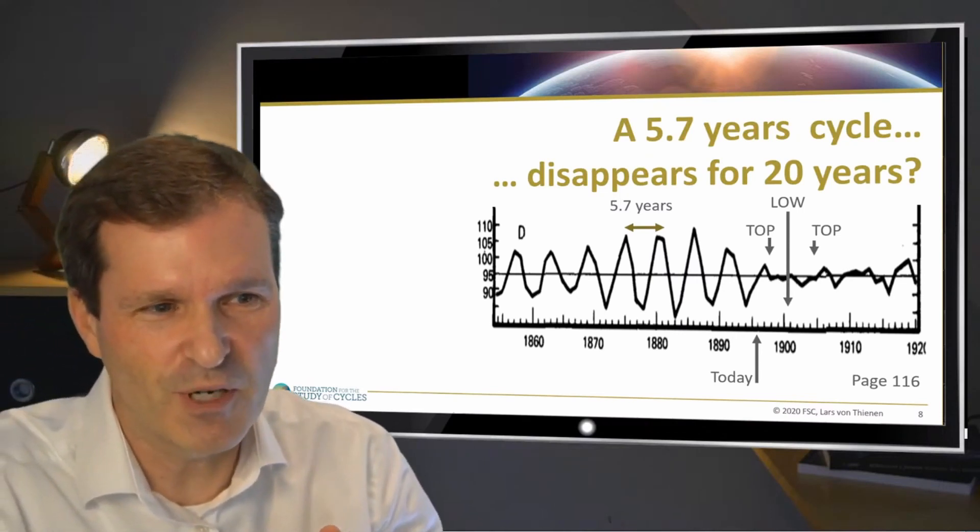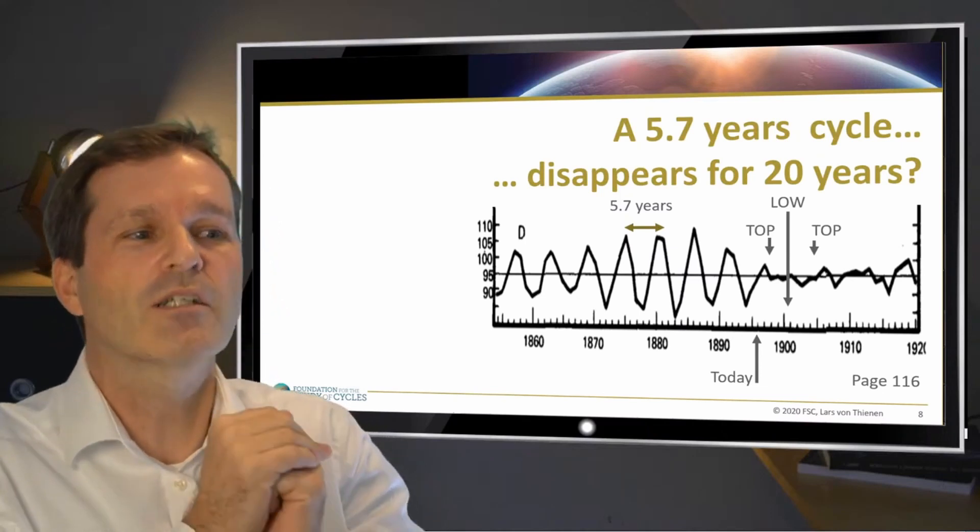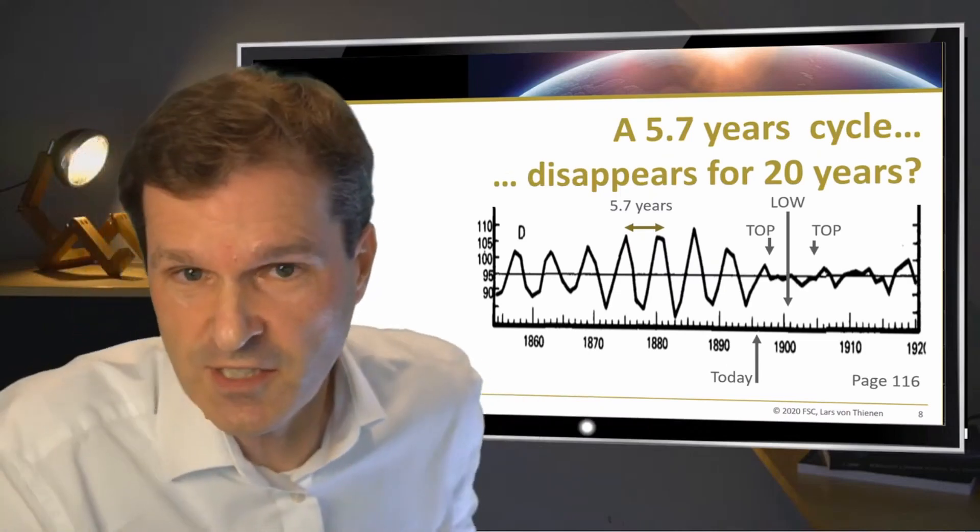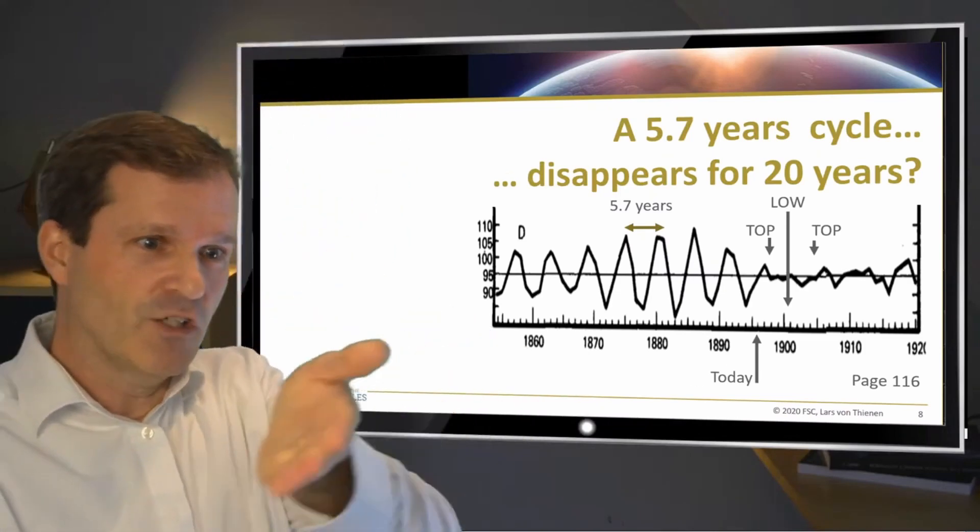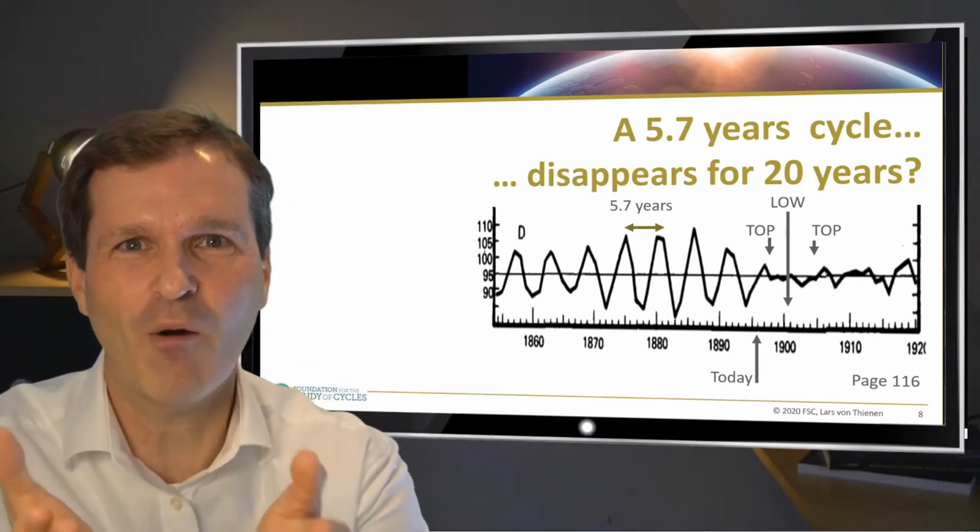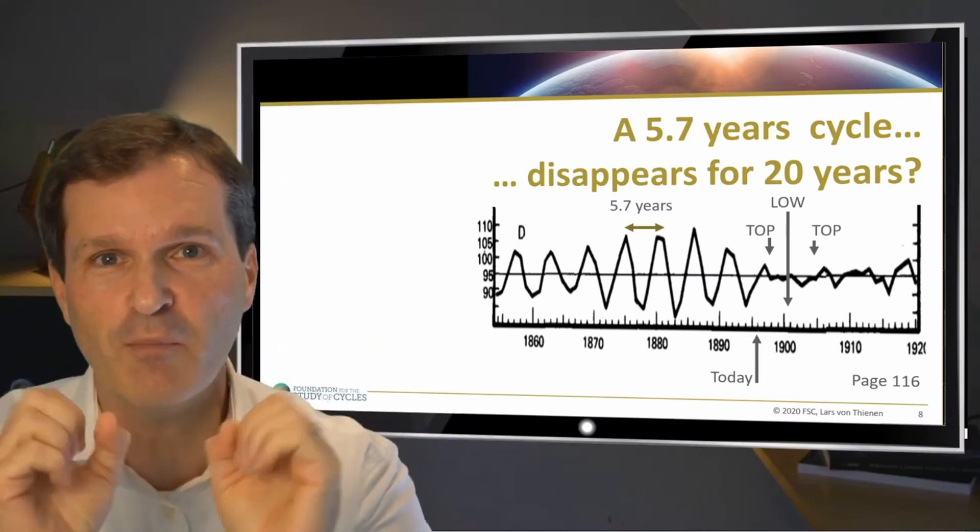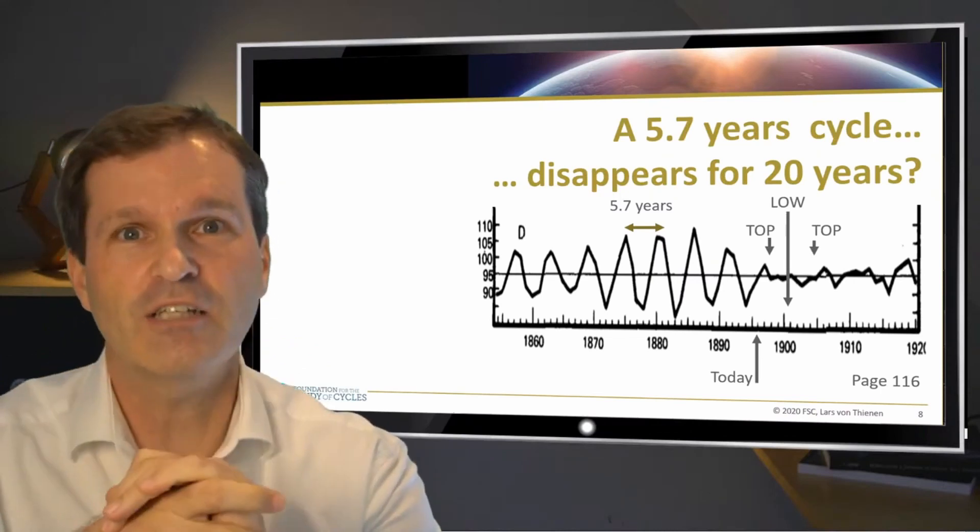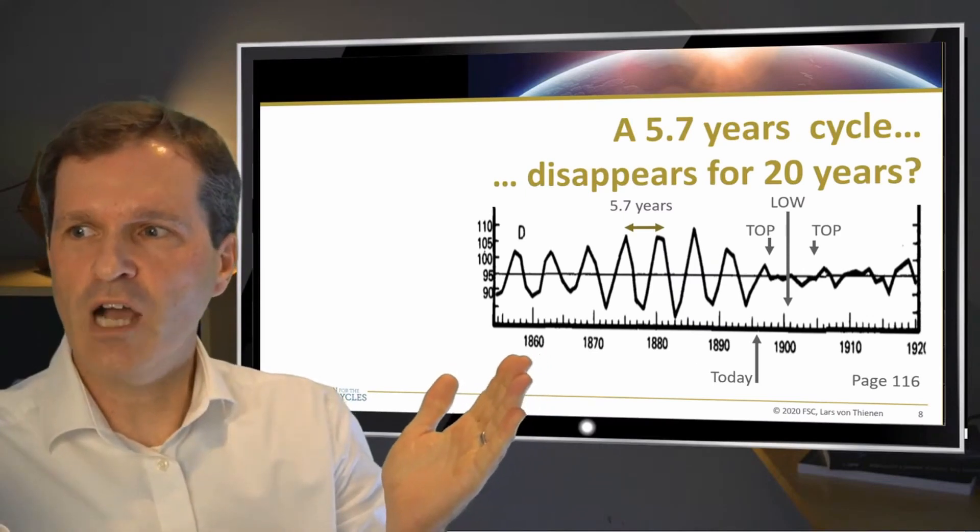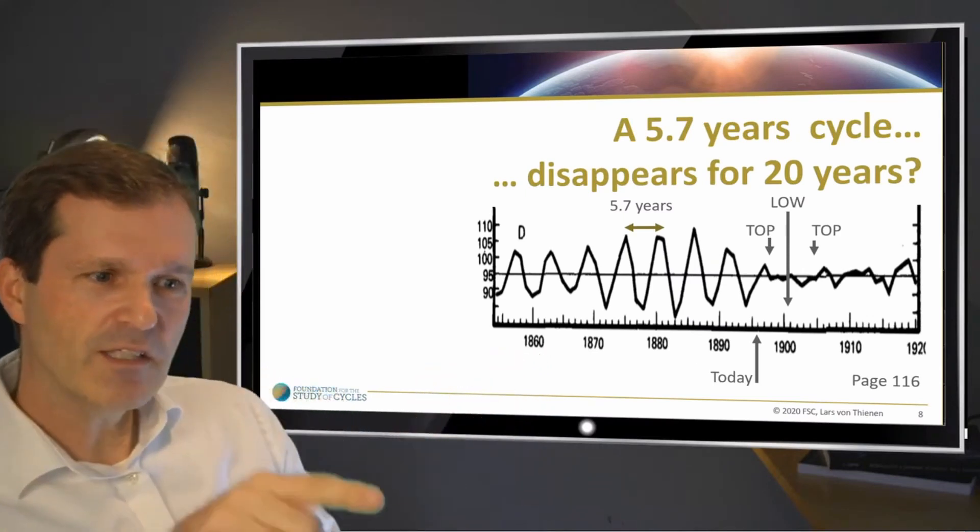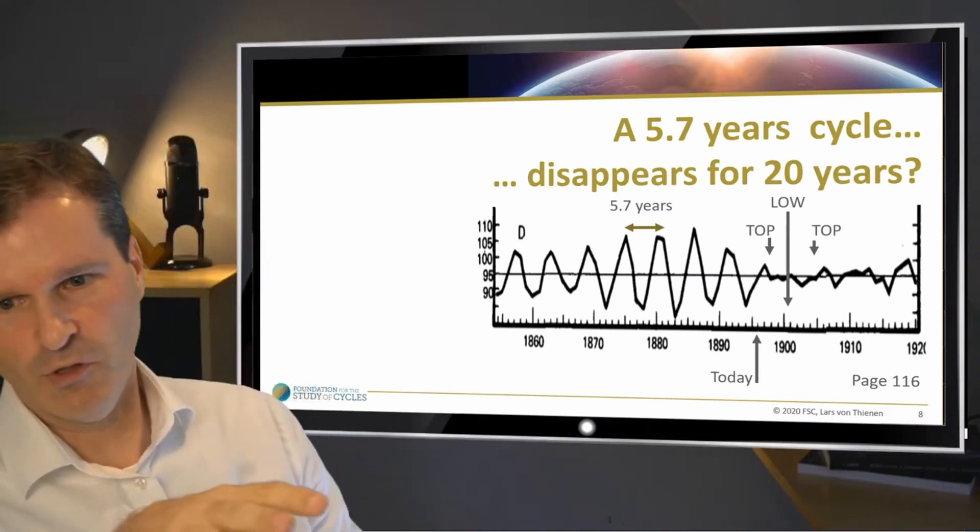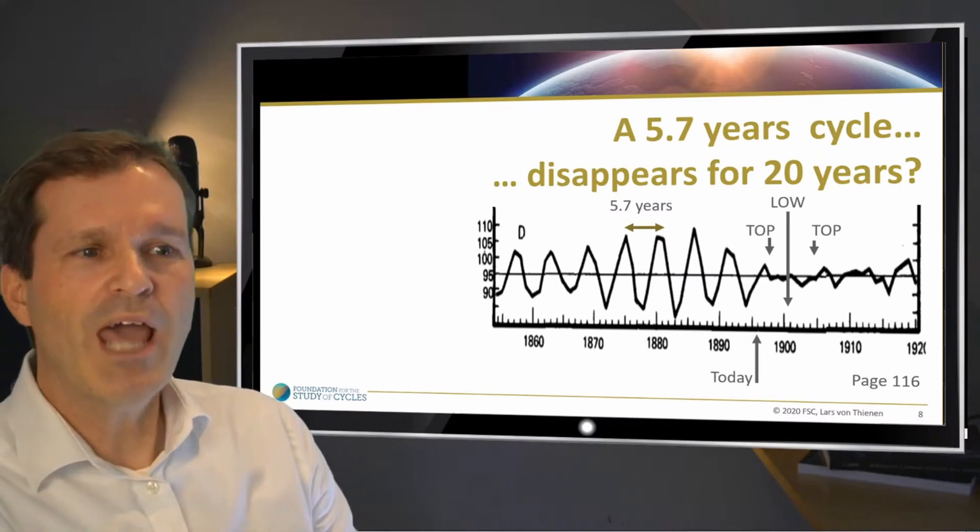Using standard forecasting approach, you would plot the period or the length of this cycle in the future, which will give you the additional tops and lows where to expect moving forward in time. But that's how it works out. Where's the top? Where's the next low? Where's the next top? The cycle disappeared. And it's not disappearing one time. It disappeared for 20 years. Gone. Cycle away.